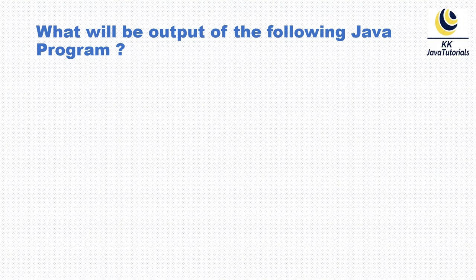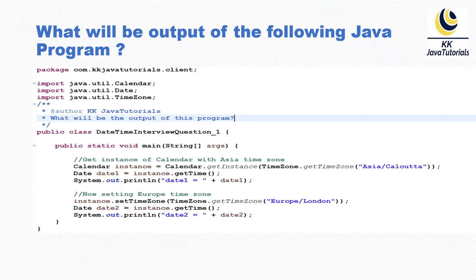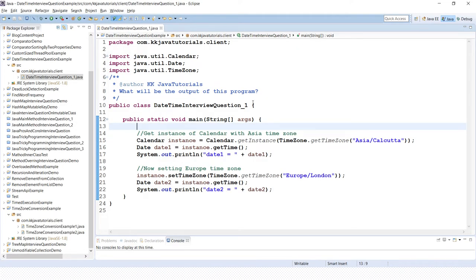The question asks: what will be the output of the following Java program? Looking at this code snippet, we first create an instance of Calendar by specifying a specific time zone, then we get the Date object out of that Calendar instance and print it. Next, on the same Calendar instance, we set a new time zone — the European time zone — get another Date object, and print it. What would be the output? It's quite tricky, and that's what I wanted to discuss. Here is the same code written in Eclipse.